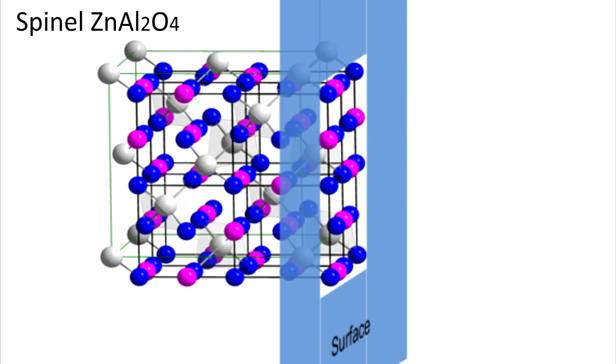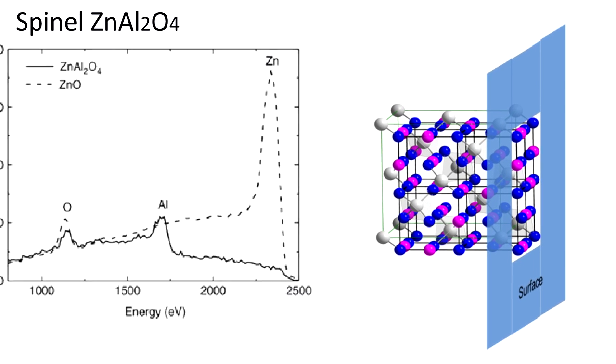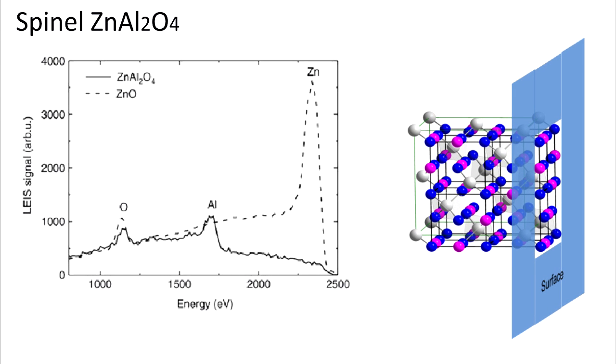A real-world example would be a zinc-aluminate spinel, where low-energy ion scattering spectroscopy can clearly detect aluminum and oxygen on the surface, but no zinc atoms, since these are located in the deeper layers.